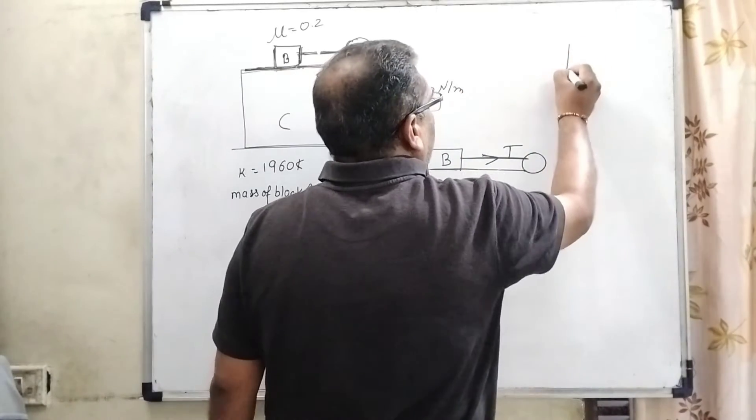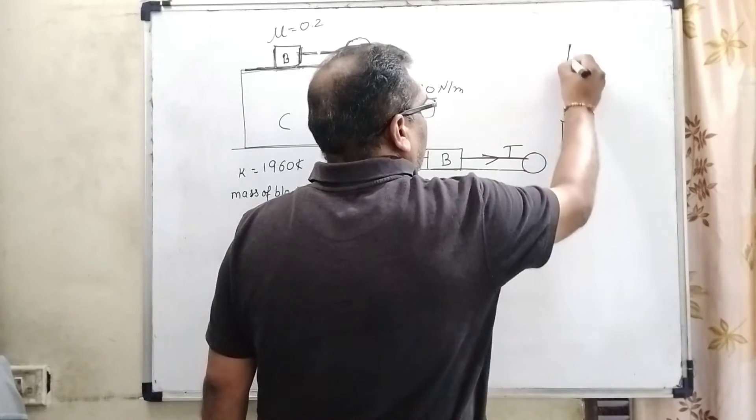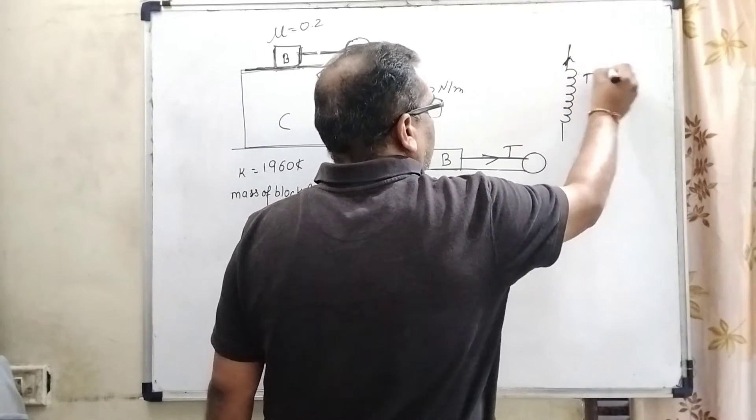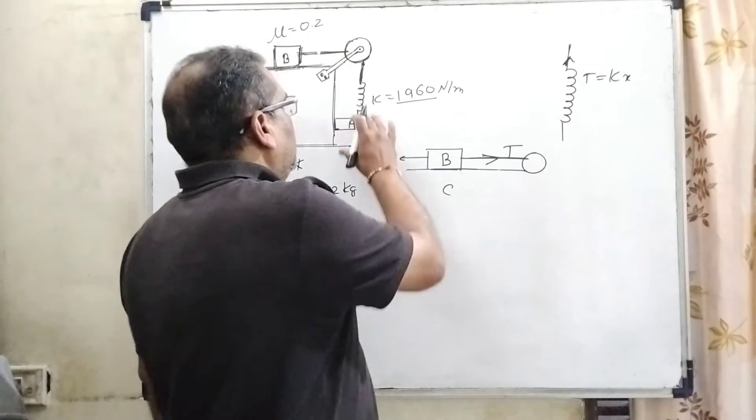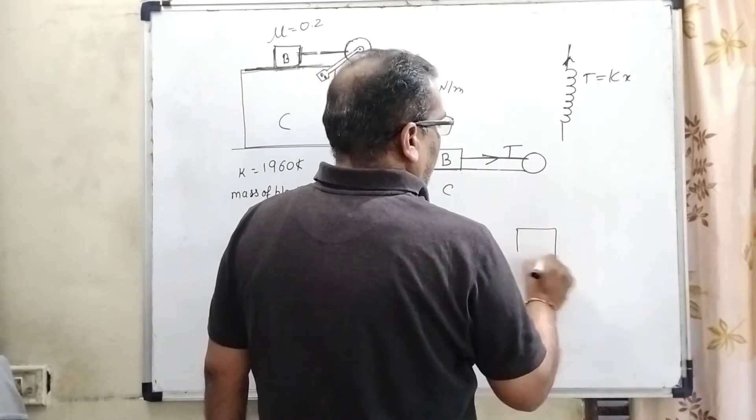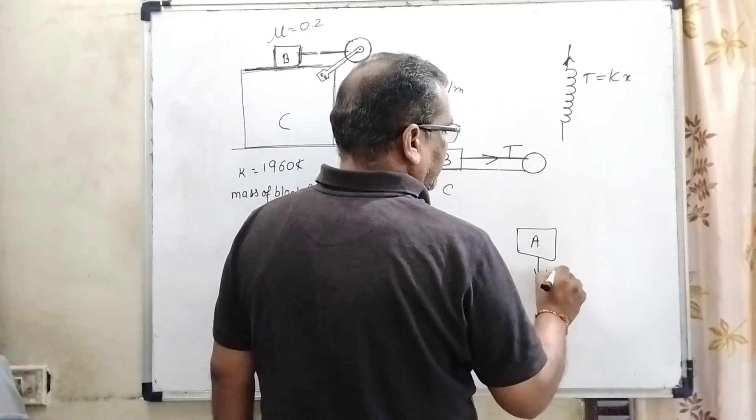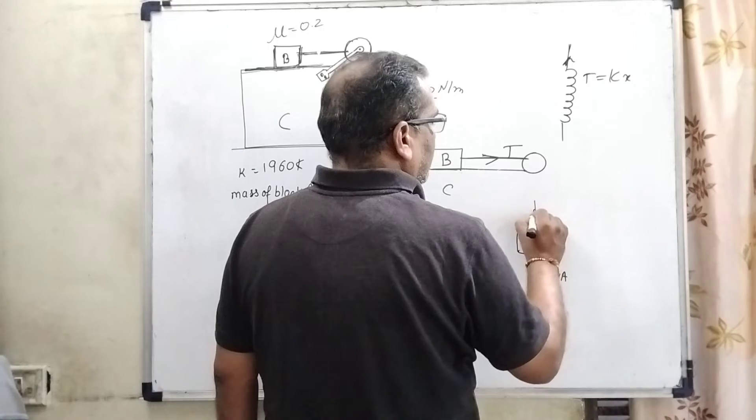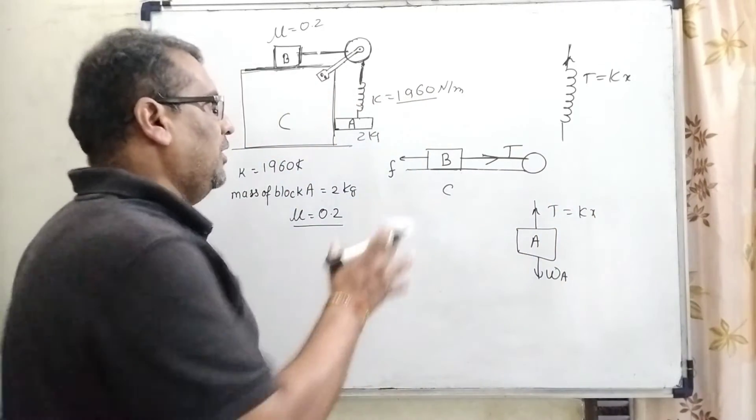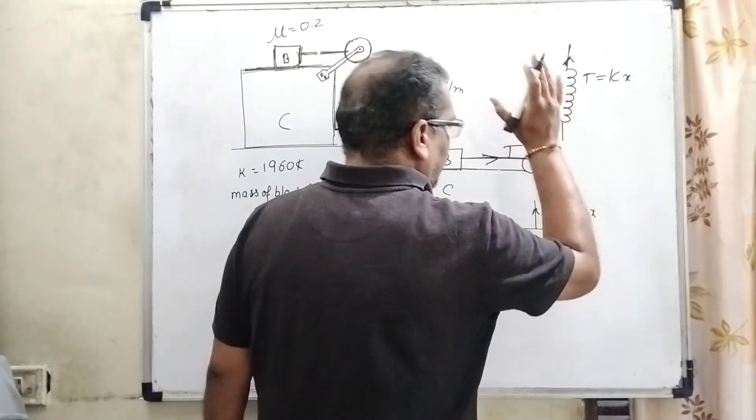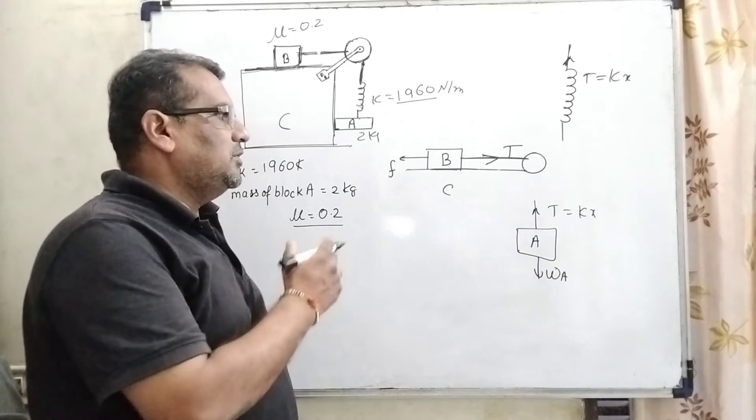Second part: this string is connected with spring, so this tension is applied, that is T equal to Kx. And third part A: here the weight of the body is acting downward direction and the tension T equal to Kx is acting upward direction. By using all these parts we can solve and get the value of mass of body B and energy stored in this system.